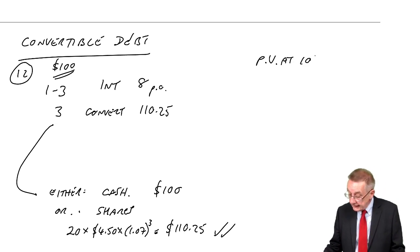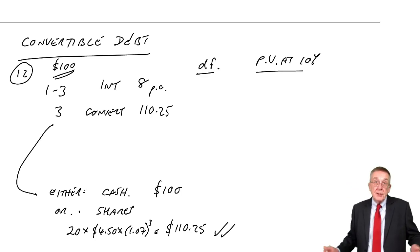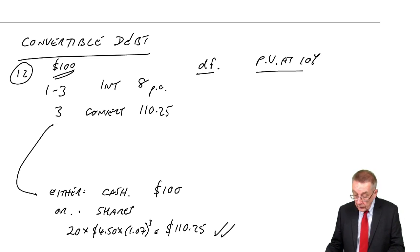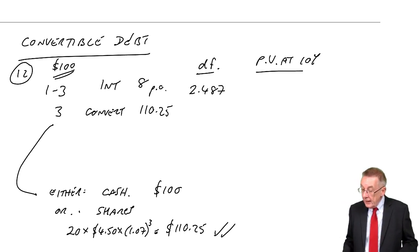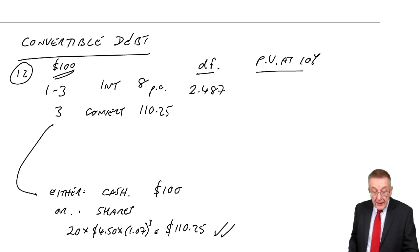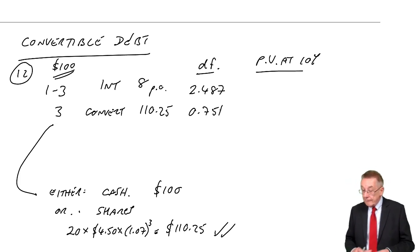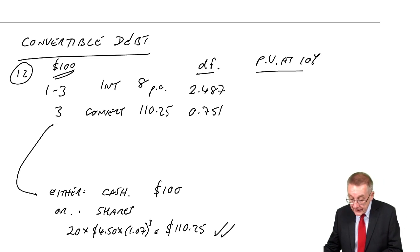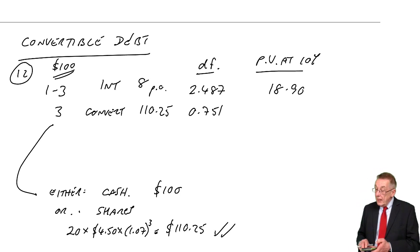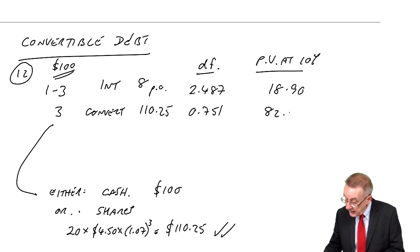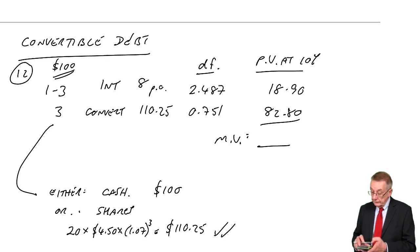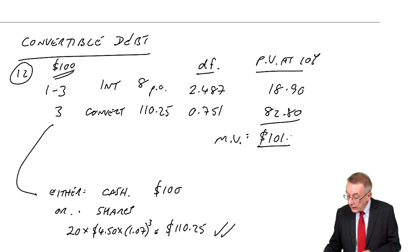Now we're back to an ordinary redemption question. The annuity factor for three years at 10% is 2.487. For the redemption in three years, the ordinary three-year factor at 10% is 0.751. So the present value is: 8 × 2.487 = 18.90, plus 110.25 × 0.751 = 82.80. The market value for $100 nominal is $101.70.